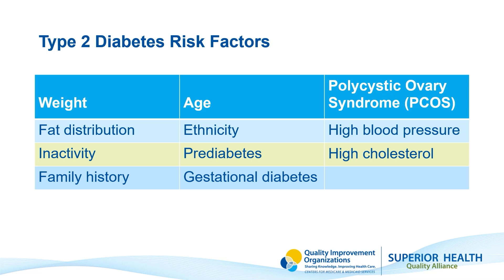And finally, high blood pressure is a risk factor. Addressing these risk factors through lifestyle changes — such as maintaining a healthy weight, staying active, and eating a balanced diet — can help reduce the risk of developing type 2 diabetes.